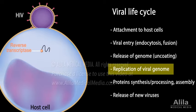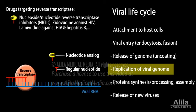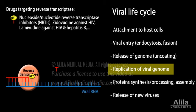Viruses that use reverse transcriptase for replication are usually targeted for this enzyme. Because reverse transcription — converting RNA to DNA — occurs only in these viruses and not in human cells, drugs targeting reverse transcriptase are generally safe for humans. Most of these agents are nucleoside or nucleotide analogs; they compete with regular nucleotides, insert themselves into the growing chain of DNA, and stop the process prematurely.